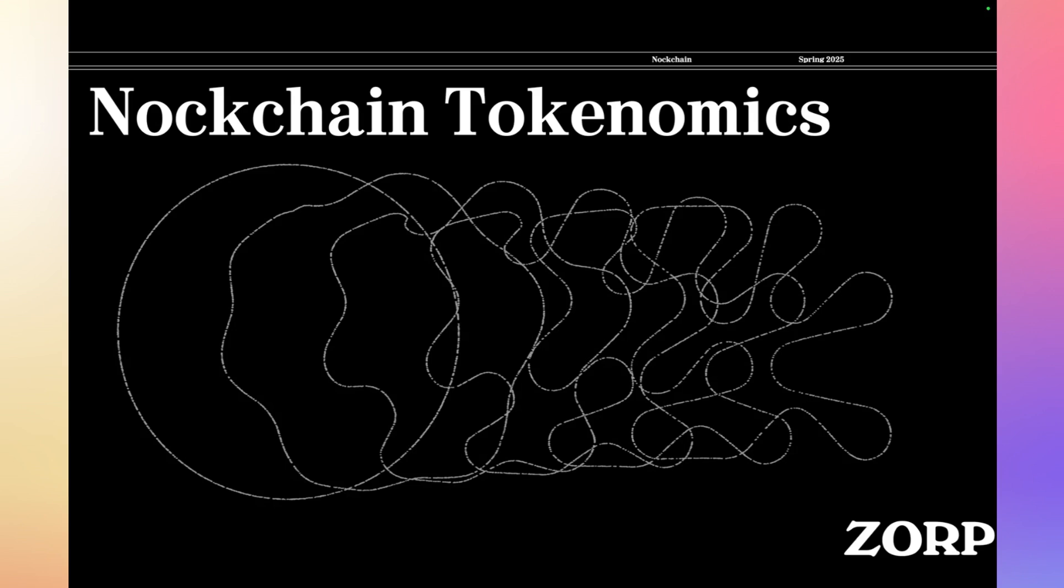NOC chain has the original cypherpunk proof of work incentives while making use of modern research into zero knowledge proofs, data availability, and scalability on the chain. In this discussion, we want to talk about the tokenomics of NOC chain and what you'll be able to do with the NOC token.